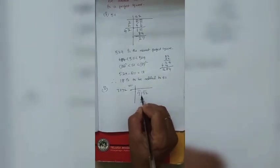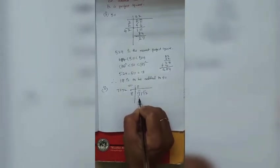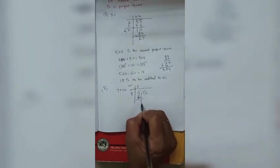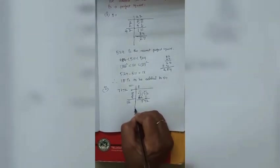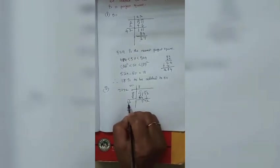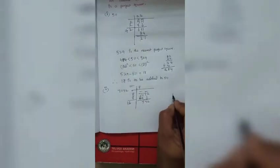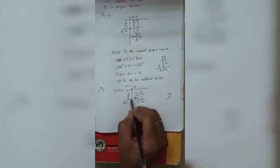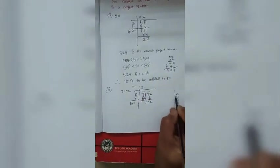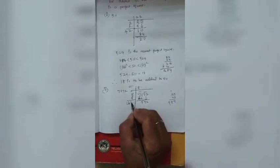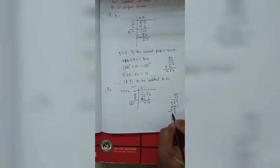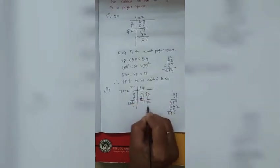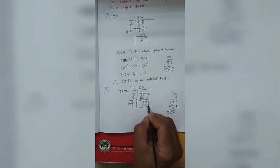For 7172, the first group is 71. The nearest perfect square root for 71 is 8, since 8² = 64. 71 minus 64 = 7. Bringing down 72 gives 772. Adding 8 to the divisor gives 16. Now we try: 163×3 = 489, 164×4 = 656.